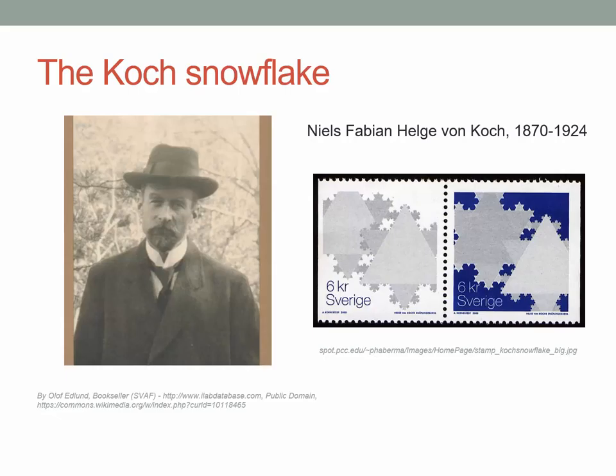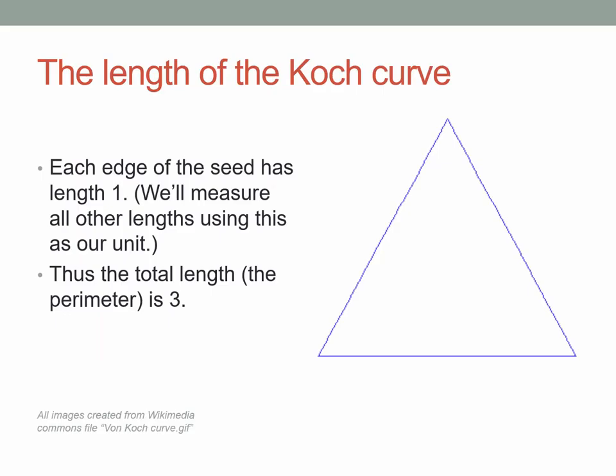This object is named for a Swedish mathematician. His name was Nils Fabian Helge von Koch, born in 1870, died in 1924. His construction of the Koch curve and the Koch snowflake is honored with a pair of Swedish postage stamps.